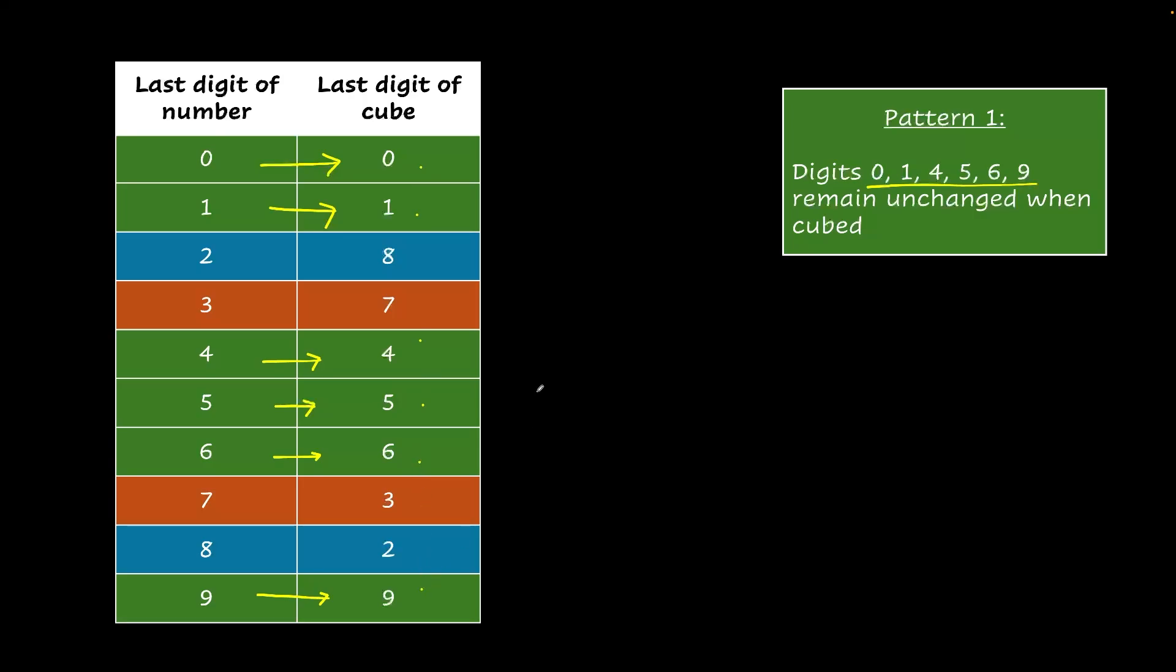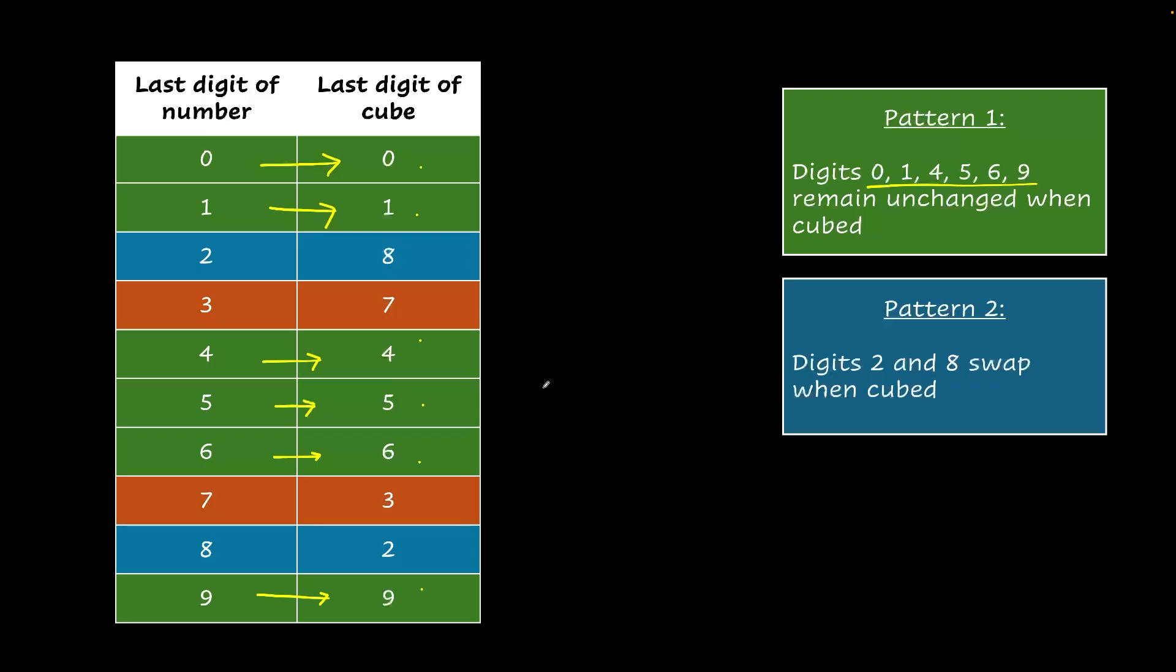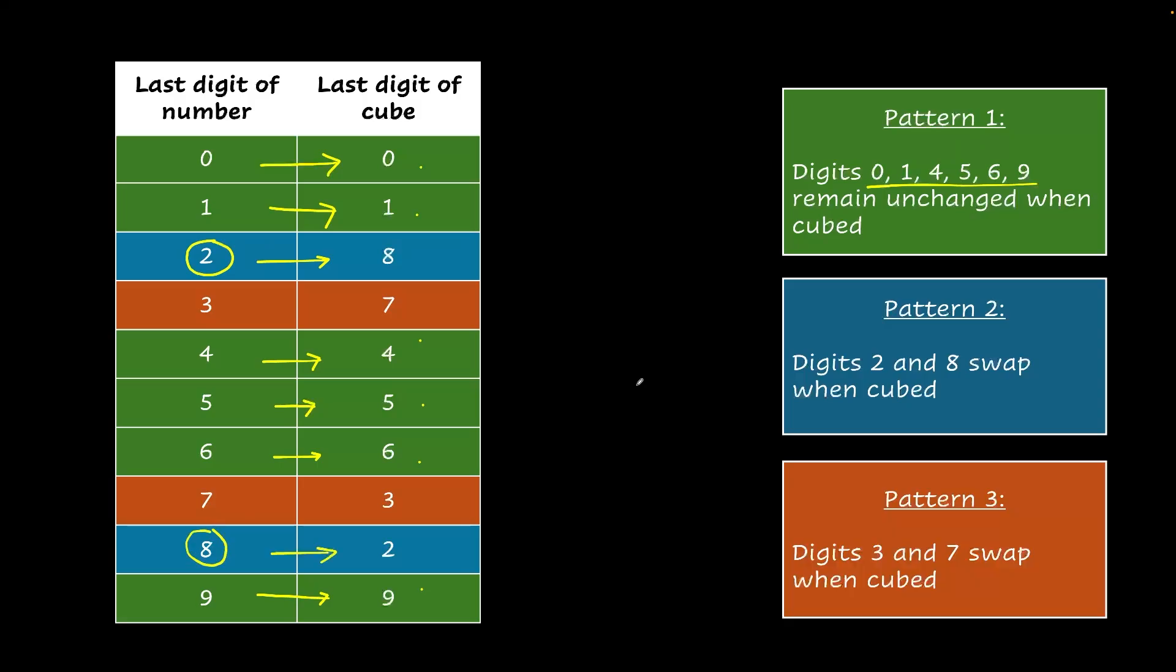That's pretty handy. And now the next pattern is digits 2 and 8 get swapped. So 2 becomes 8 and 8 becomes 2. They get swapped. And pattern 3 is digits 3 and 7 also get swapped. 3 becomes a 7 and 7 becomes a 3. Those are very simple patterns that we can easily remember for us to figure out the units digit of any cube.